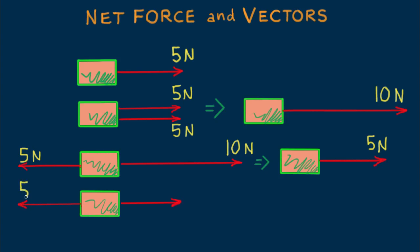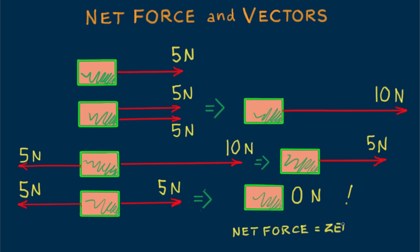Suppose a pair of 5 Newton forces in opposite directions act on the box. What then? They cancel out. The net force in a box is zero. When the net force in something is zero, no change in motion occurs. We say the box is in mechanical equilibrium.